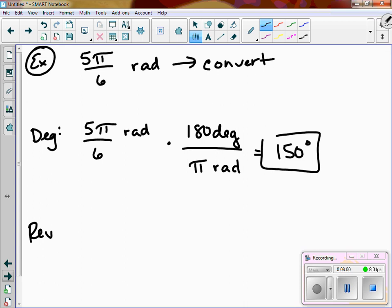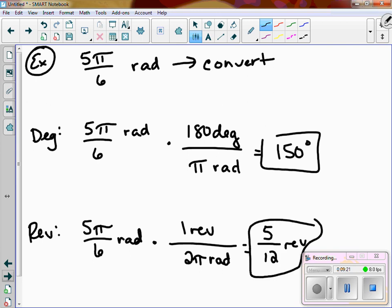And then last but not least, convert to revolutions. So it's 5 pi over 6 radians times, 1 revolution, remember, is 2 pi. Notice the pi's cancel, which is very nice of them. So we get 5 over 12 revolutions. I know that was a lot of converting, but I wanted to go through and show you what happens if you get different ones, because it does flip a little bit. But all this really is is just your unit conversions like you would do in science.